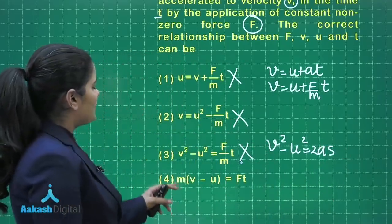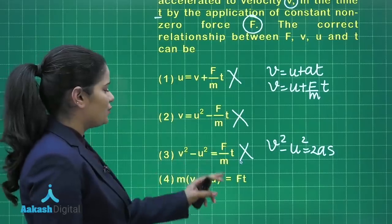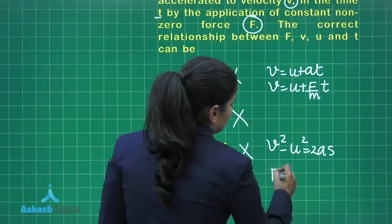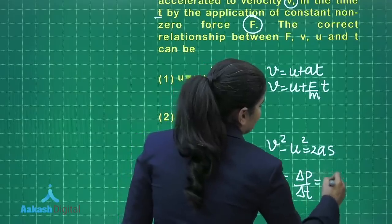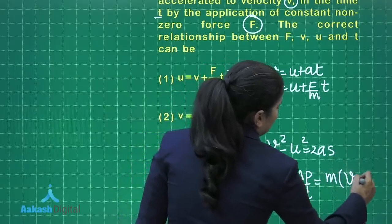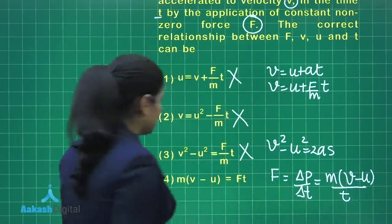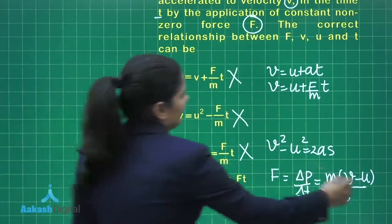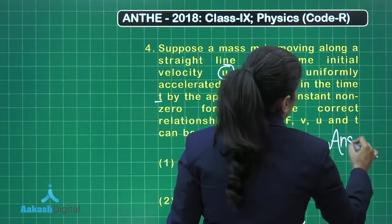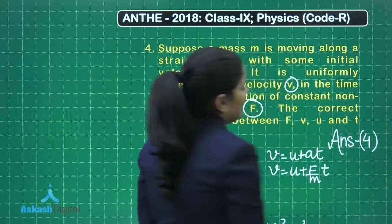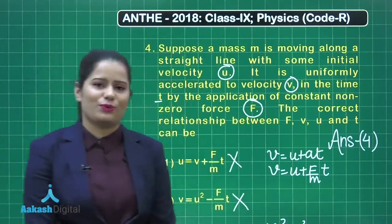We have the fourth option as M in the bracket V minus U equals F into t. We know F is simply the rate of change of linear momentum and hence it can be written as M in the bracket V minus U by t. This option is going to be the correct option. The answer of this question is option number 4. Let's quickly move on to the solution for the next question.